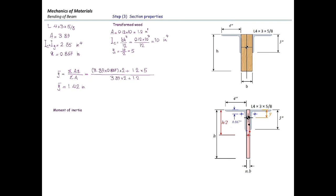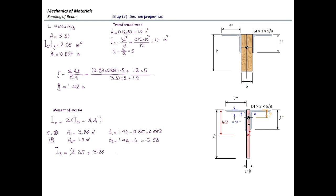The moment of inertia is computed using I = Σ(I_c + A·d²). The d values are: d1 = y-bar − y_steel = 1.42 − 0.867 = 0.553 inches for the steel parts, and d2 = y-bar − y_wood = 1.42 − 5 = −3.58 inches for the transformed wood. Plugging all values into the parallel-axis theorem gives the total moment of inertia I = 33.46 in⁴.